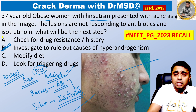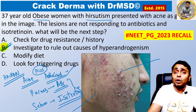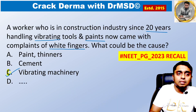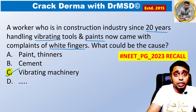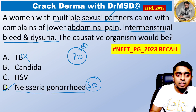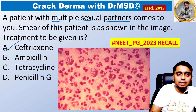For this question, the answer is investigate to rule out the causes of hyperandrogenism. For this question, the answer is vibrating machinery. And the answer for this question is Neisseria gonorrhea. And the answer for this question is ceftriaxone.